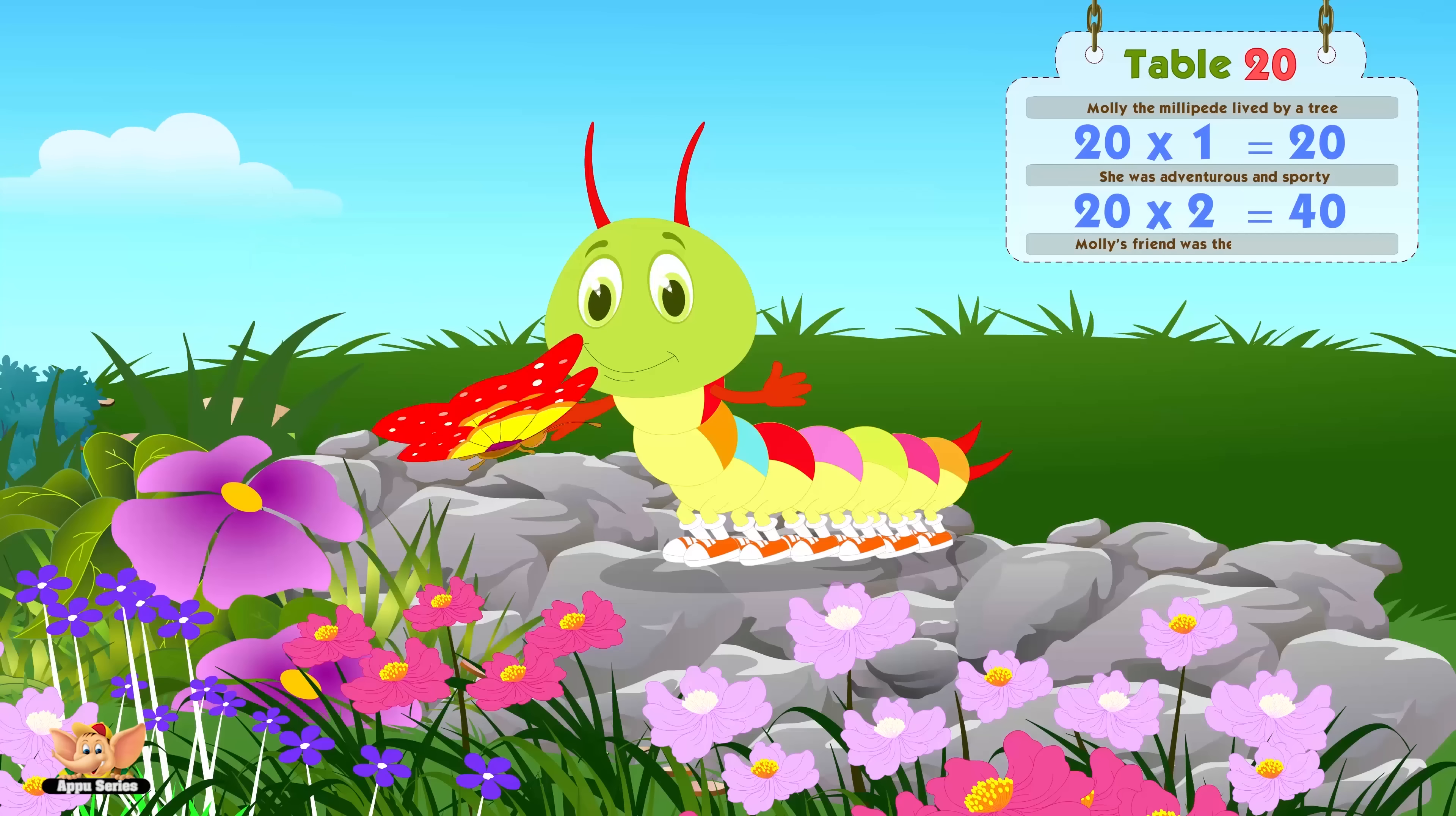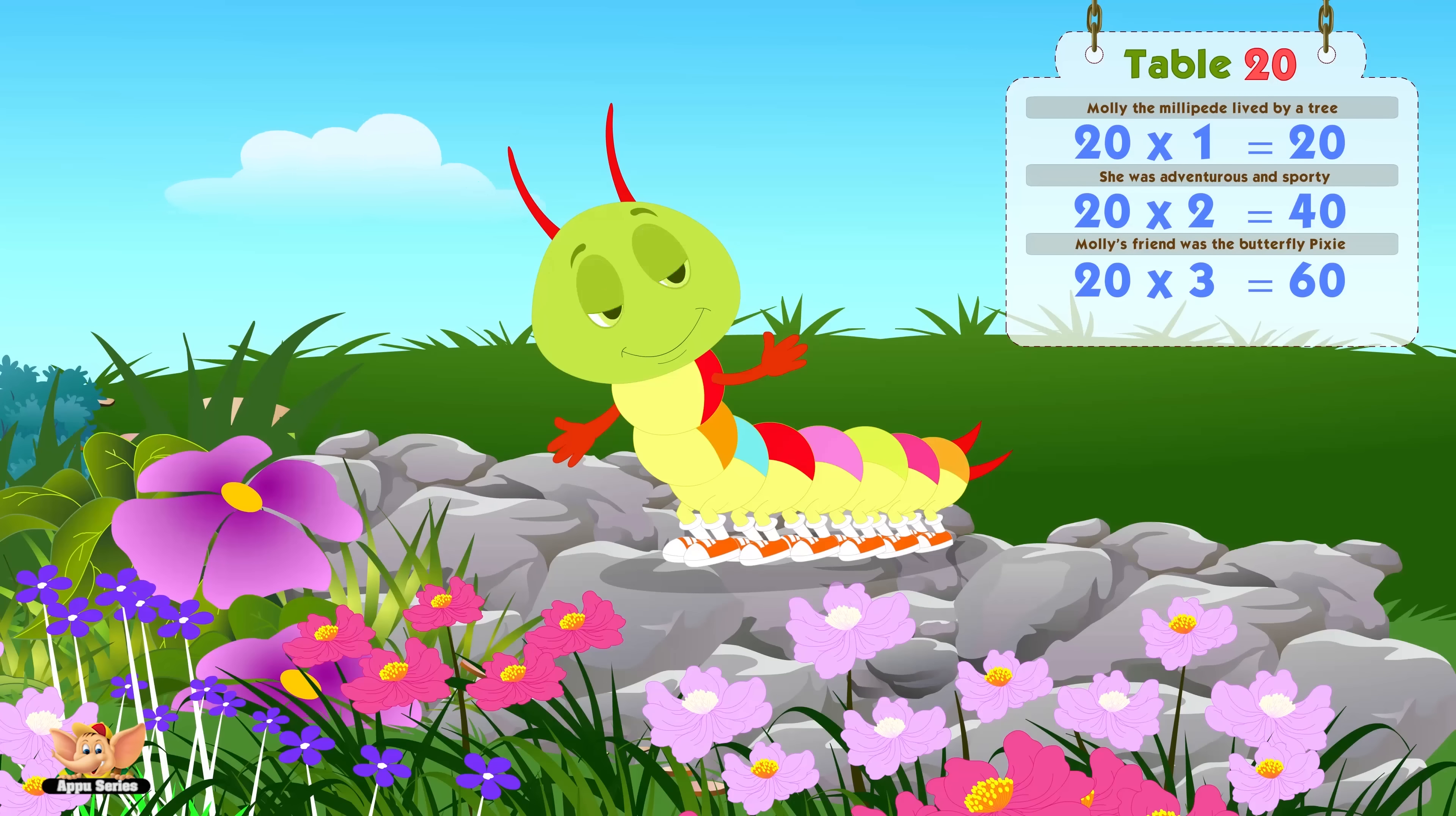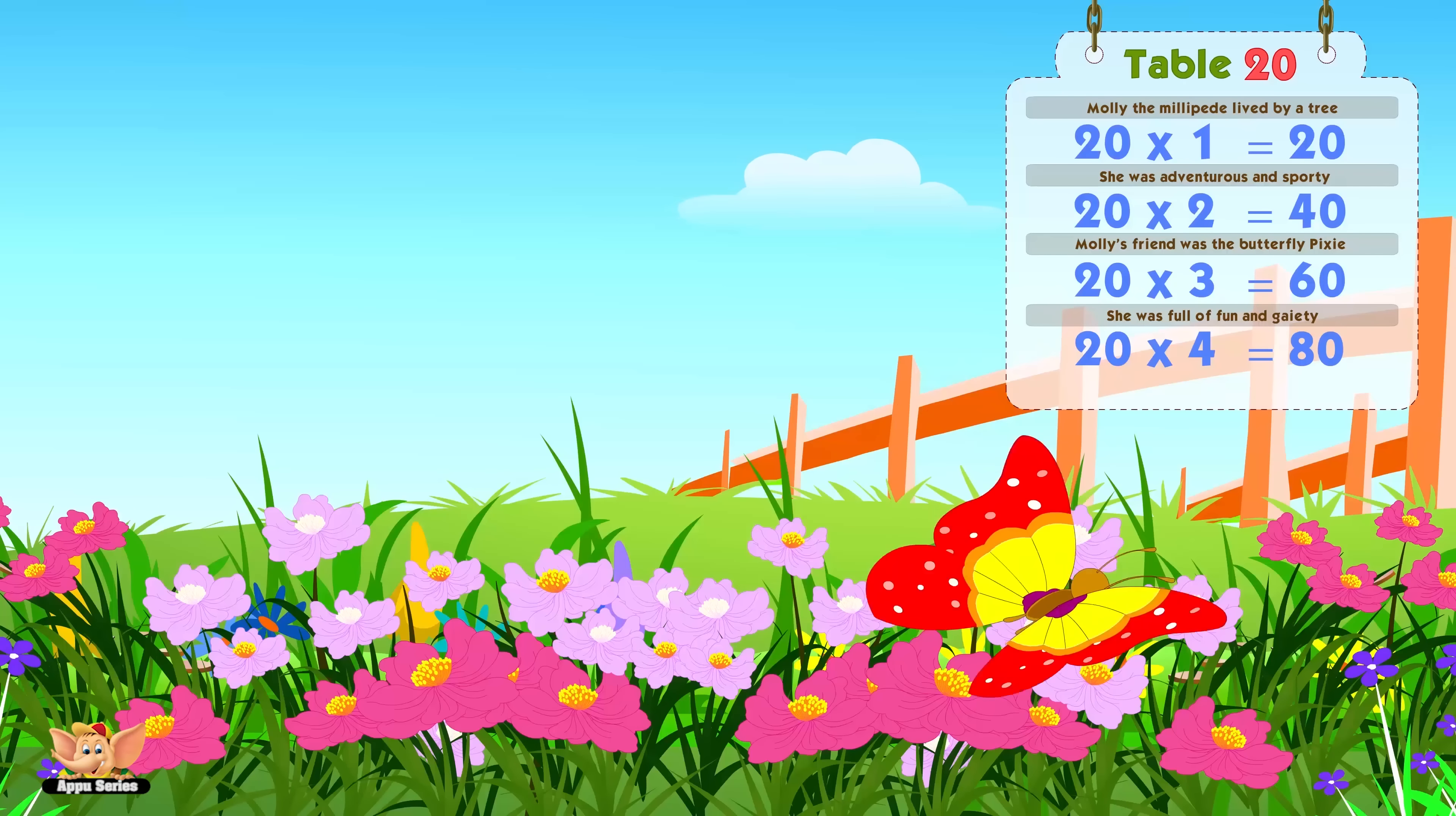Molly's friend was the Butterfly Pixie. Twenty threes are sixty. She was full of fun and gaiety. Twenty fours are eighty.